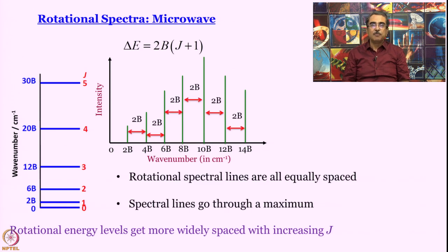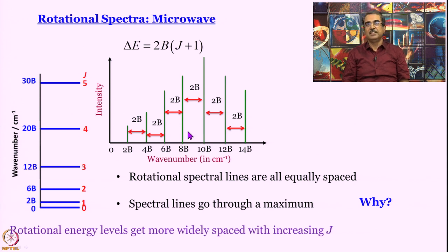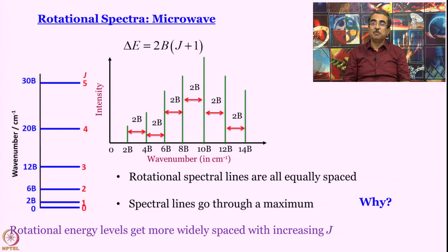Of what use is that? Since the lines are equally spaced, from the spacing you can find out what B is. Since B = h/(8π²Ic) and I = μR₀², if you know the reduced mass — which there are easier ways of finding — you can actually determine the bond length. It is a very elegant, easy method of finding bond length. We are going to come back to that.